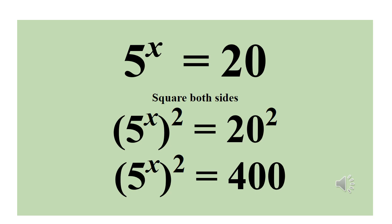We can square both sides in order to have 5 raised to power 2x. If we square both sides, we have 5 raised to power x, in bracket, squared equals 20 squared. Since we have squared both sides, 20 times 20 gives us 400. So we now have 5 raised to power x, in bracket, squared equals 400.